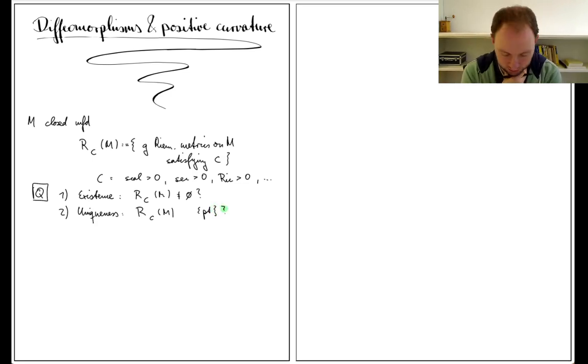The problem is that asking the uniqueness question literally is not sensible, because the answer will almost never be yes. In particular, for the three cases I've written above, these are open conditions, so if there is one metric satisfying these, there will be lots of them. But it's sensible to ask if the space is homotopy equivalent to a point, which amounts to studying the homotopy groups of the space and asking if they are isomorphic to the trivial group.